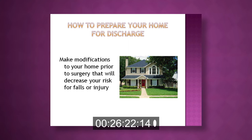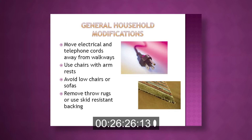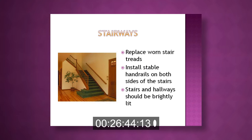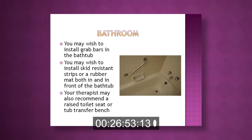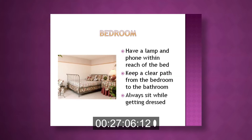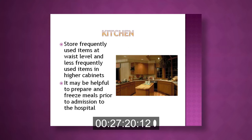Make modifications to your home before surgery to decrease your risk of falls or injury. Move electrical and phone cords away from walkways. Use chairs with armrests and avoid low chairs or sofas. Remove throw rugs. For stairways, replace worn stair treads, install stable handrails on both sides, and ensure stairs and hallways are brightly lit. In the bathroom, install grab bars and skid-resistant strips in the bathtub, and consider a raised toilet seat. In the bedroom, keep a lamp and phone within reach and maintain a clear path to the bathroom. In the kitchen, store frequently used items at waist level, and consider preparing and freezing meals before your admission.